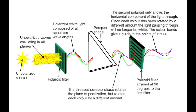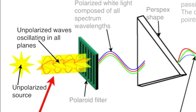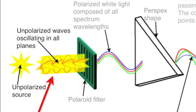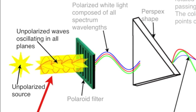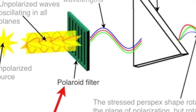The arrangement we have is illustrated here. There's an unpolarized source of light with the unpolarized waves oscillating in all planes. That source then passes through a Polaroid filter, which polarizes it, in this case vertically.